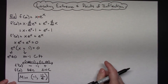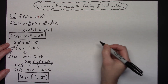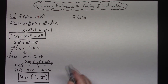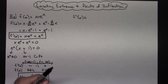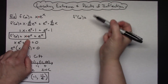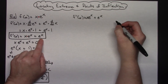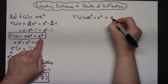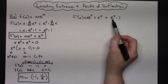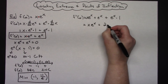For points of inflection, I need to calculate the second derivative. Looking at the first derivative x e to the x plus e to the x: the first part involves a product, but that derivative is just the original function, so the derivative of x e to the x gives x e to the x plus e to the x again. Then the derivative of the second e to the x term gives e to the x times 1. Combining the two e to the x terms, the second derivative simplifies to x e to the x plus 2 e to the x.